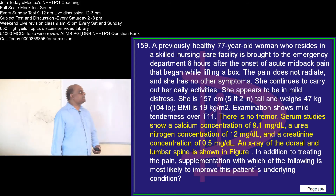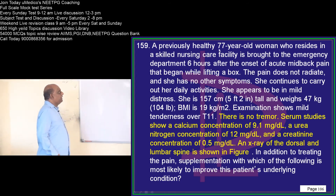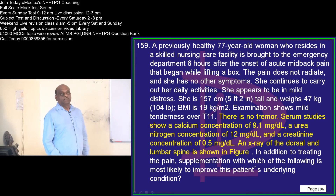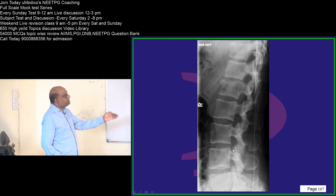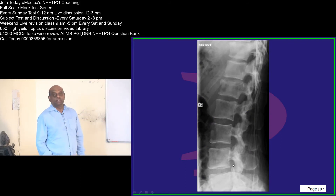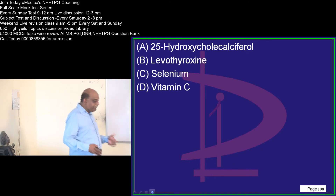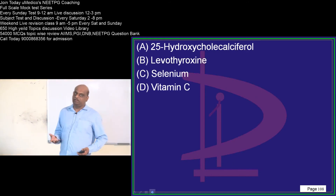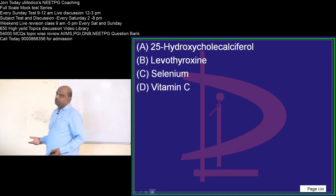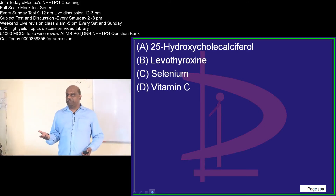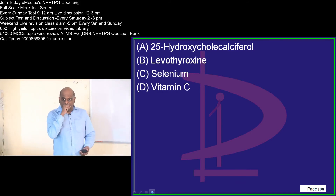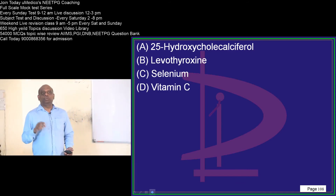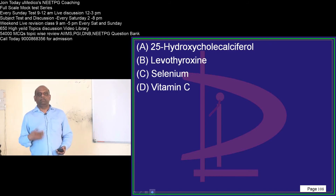A previously healthy 77-year-old with no tremor has a serum calcium of 9.1 and an X-ray of the dorsal lumbar spine showing a wedge fracture. What supplementation will help this patient? Elderly people have osteomalacia with vitamin D deficiency and osteoporosis due to matrix problems, so they should be given good supplementation with vitamin D.